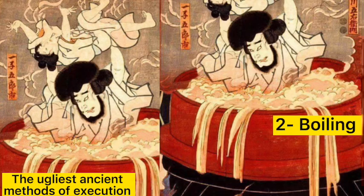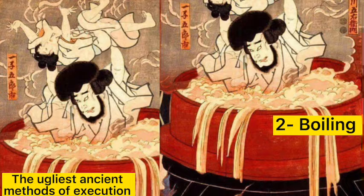Method 2: Boiling. During the boiling execution, the criminal is stripped of his clothes and then thrown into a kettle filled with boiling liquid, which can be water, oil, tar, acid, wax, wine, or even molten lead. This method was used in several regions of Europe and Asia.